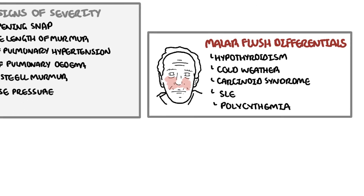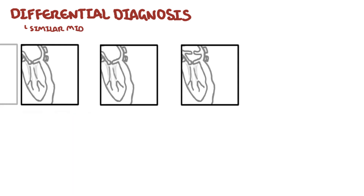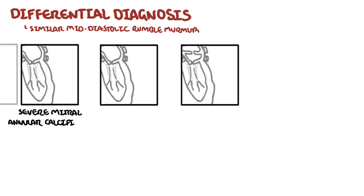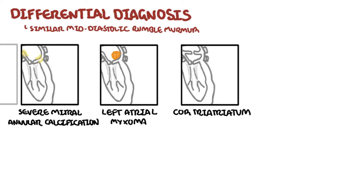The differential diagnosis of a mitral stenosis murmur — that mid-diastolic rumbling murmur — includes three conditions: severe mitral annular calcification, which causes functional mitral stenosis due to reduction in annular size and fibrocalcific changes of the leaflets; left atrial myxoma, a benign cardiac tumour in the left atria presenting with symptoms similar to mitral stenosis; and cor triatriatum, a division of the left or right atria by a membrane causing obstruction to flow.